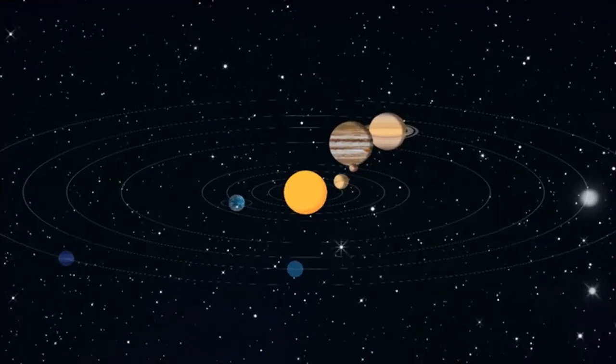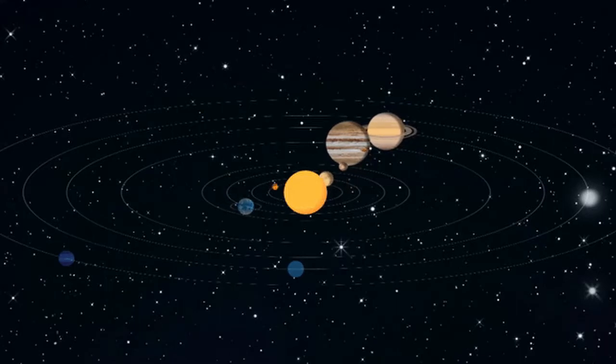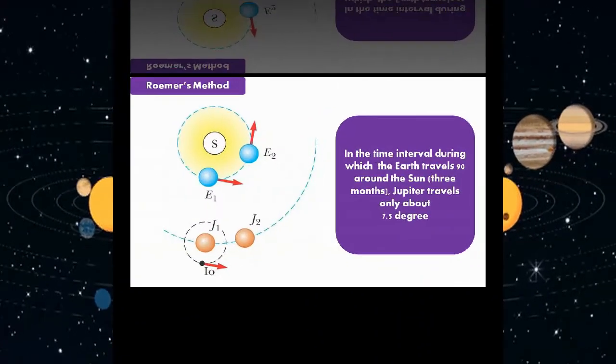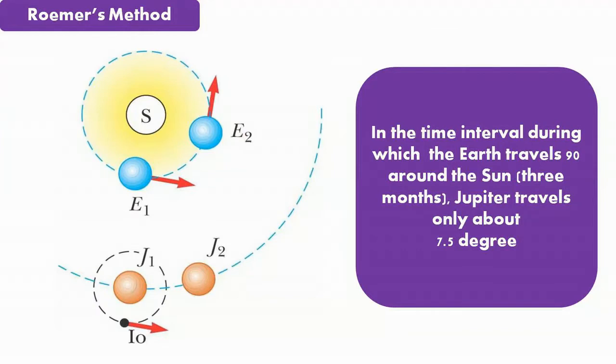Io has a period of revolution around Jupiter of approximately 42.5 hours. The period of revolution of Jupiter around the Sun is about 12 years. Therefore, as the Earth moves through 90 degrees around the Sun, Jupiter revolves through only 7.5 degrees.